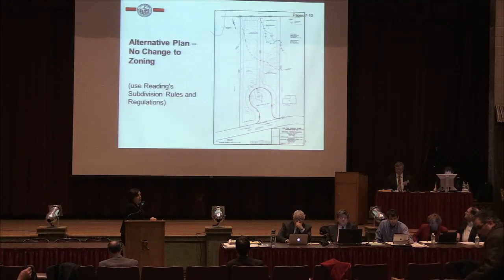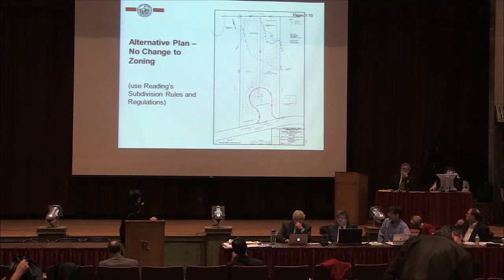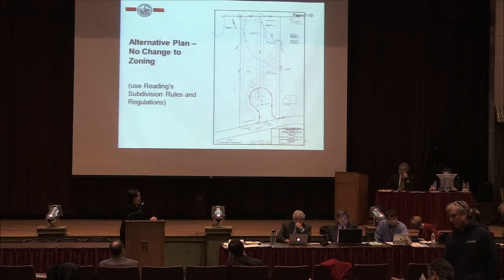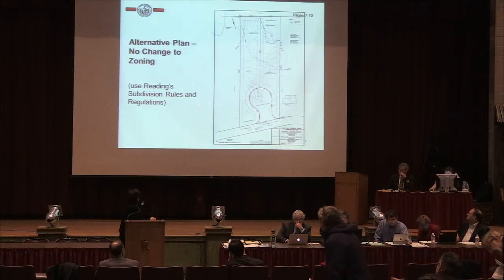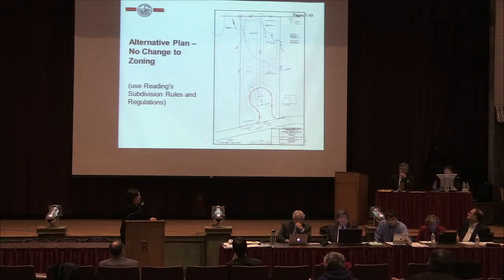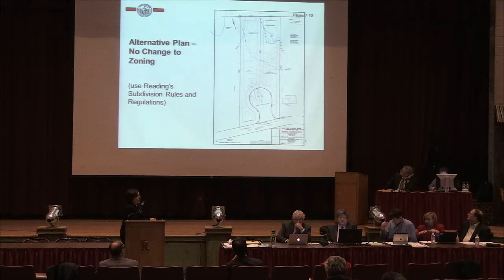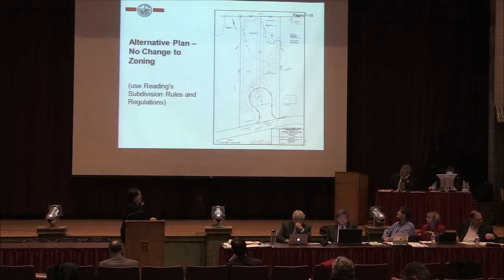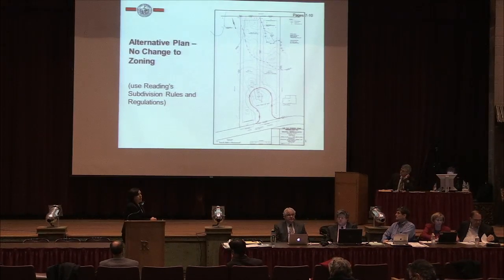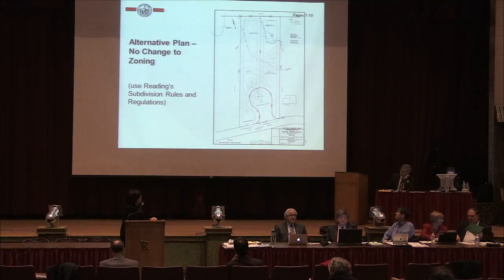This property could also be developed as a subdivision. Using Redding's subdivision rules and regulations, a cul-de-sac is created and two lots are provided under subdivision control. So if the PRD zoning is passed, that would be available to the property owner; if not, the subdivision is the alternative.